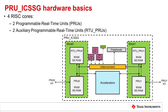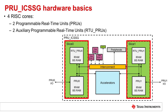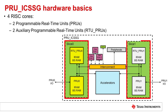The PRU-ICSS-G is divided into two halves called slice 0 and slice 1. These slices are 100% symmetrical. As shown in the figure on the slide, slice 0 contains RTU 0 and PRU 0, while slice 1 contains RTU 1 and PRU 1. Each PRU or RTU can operate either independently or in coordination with the ARM or the other PRU or RTU cores. This allows each PRU and RTU to be used for a different task, or for the cores to be used in tandem for more advanced tasks.